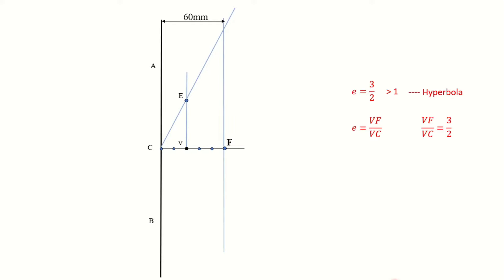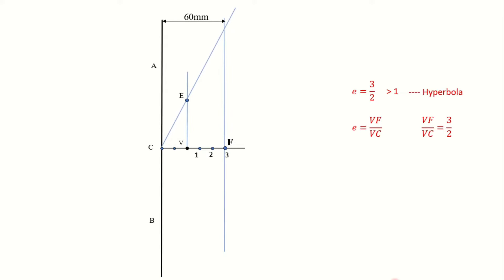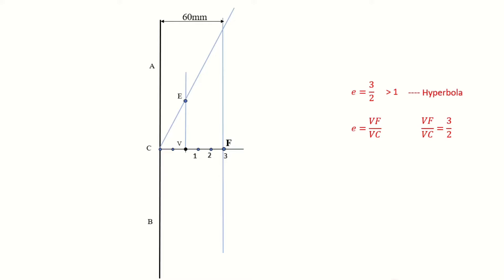Now we must divide the axis line into equal number of divisions. We already have equal division points beyond point V on the axis line, so we will continue with those points and name them as 1, 2, and 3. Point 3 is taken at the same point where focus point F is given. Now we will draw straight vertical lines at points 1, 2, and 3. Wherever these lines cut that slanted line, we will name those points as 1', 2', and 3'.